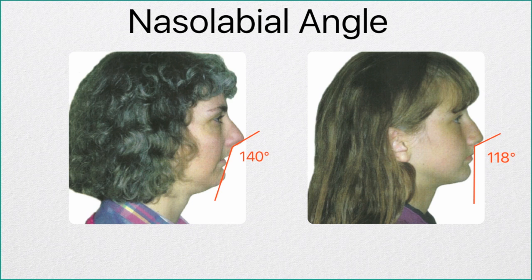This gives her very flat cheeks and a very empty look to her face. Her daughter had the exact same problem orthodontically — a peg lateral incisor and a missing lateral. But we opened space to put a veneer for the peg lateral and an implant for the missing lateral. We didn't take out any teeth in the mandible and we used orthotropics to develop the face forward, resulting in a 118 degree nose lip angle.